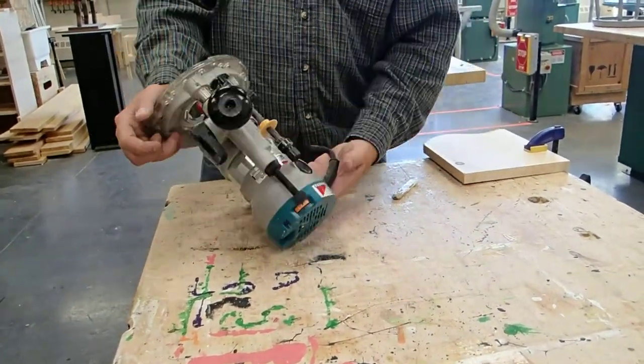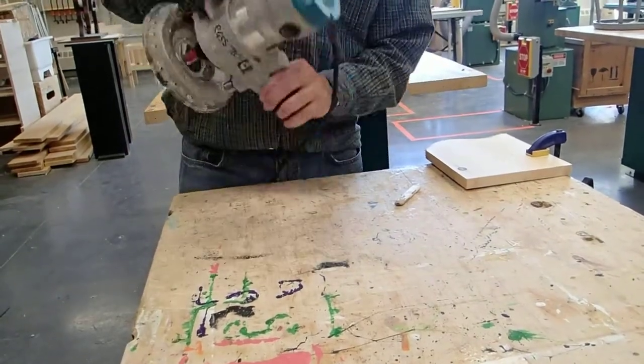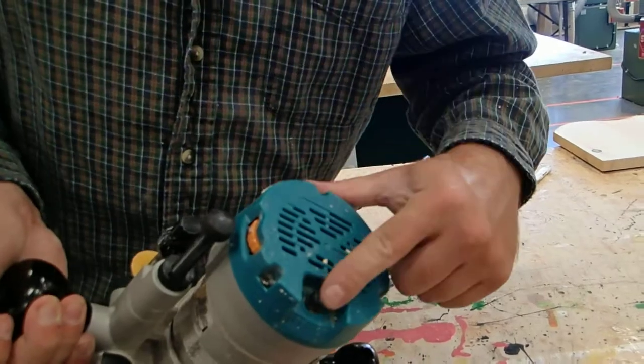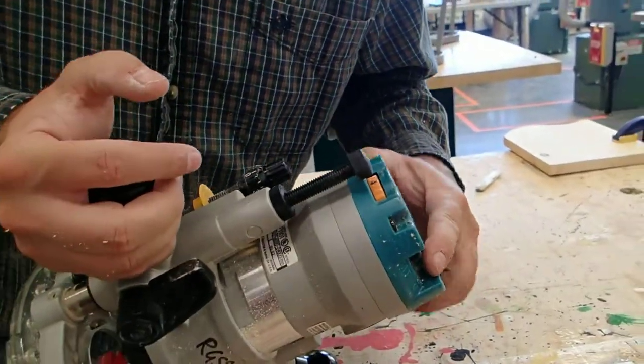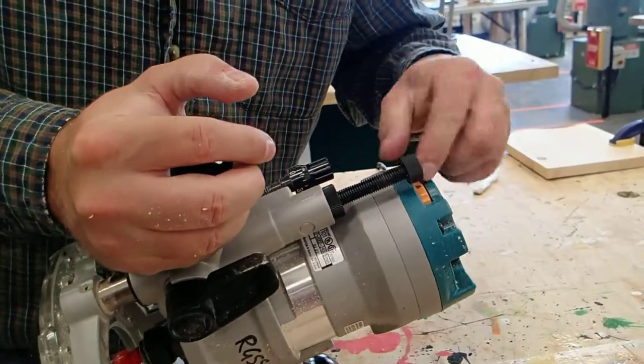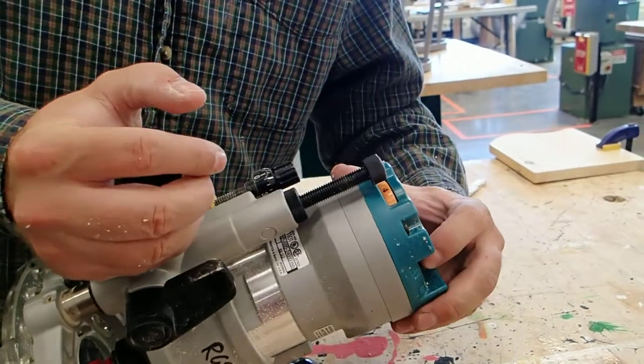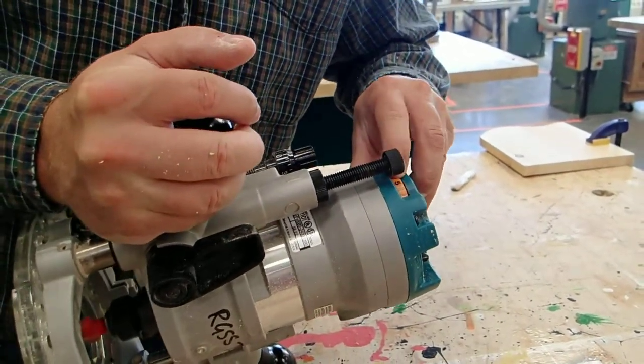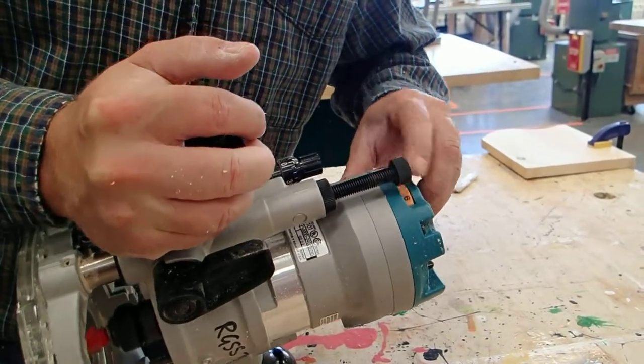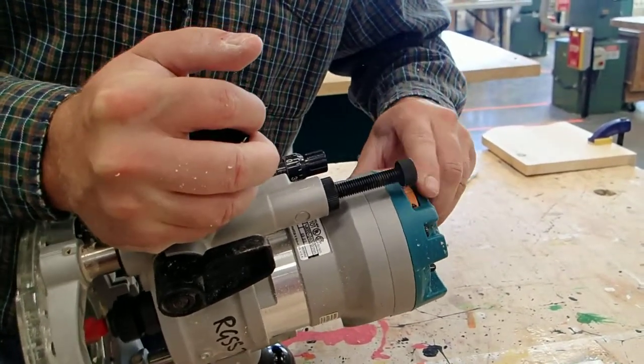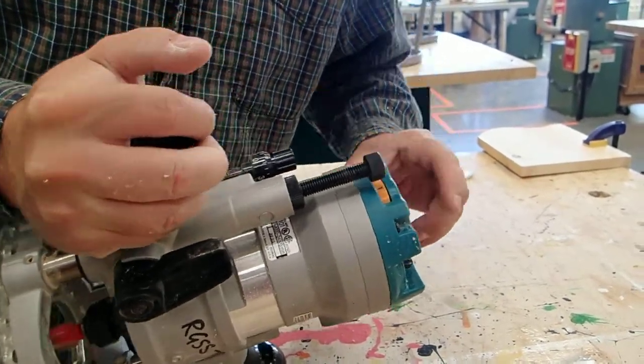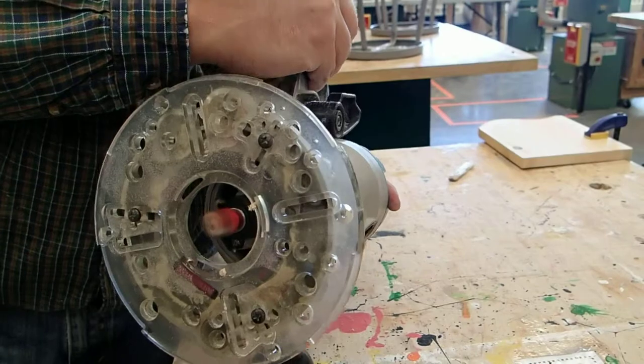Now in order to start this, there's an on-off button on the top right here, this little black thing, and it also has a speed dial on the side. When you turn it on, you can make it go faster or slower. See, as you can see, it goes nice and slow.